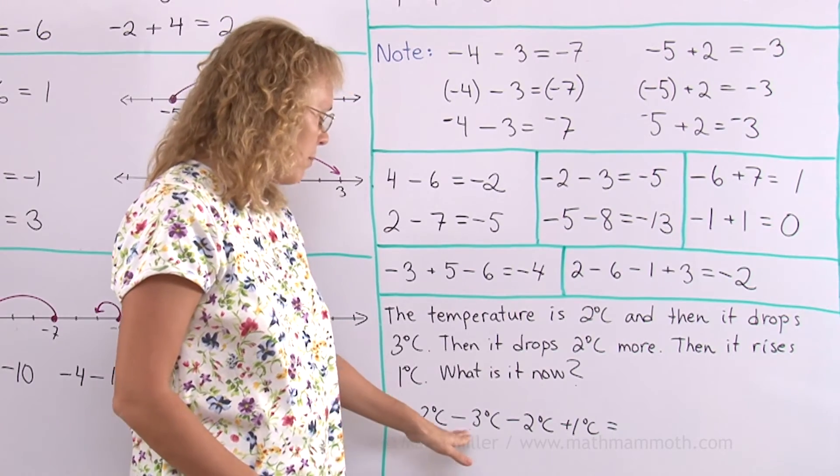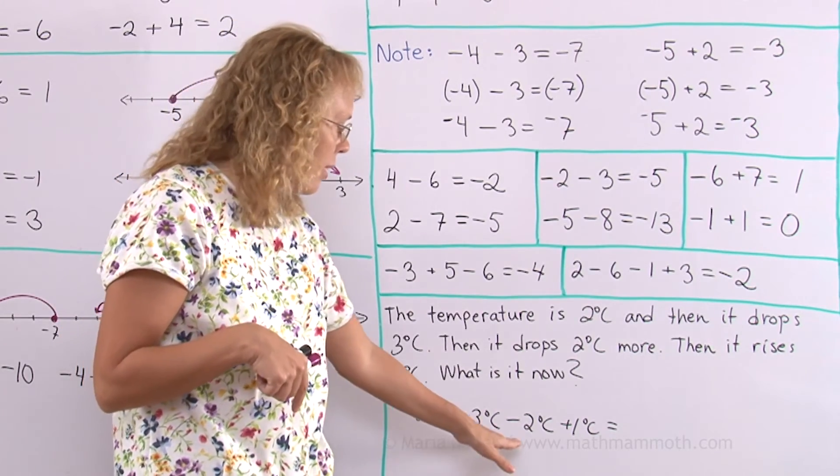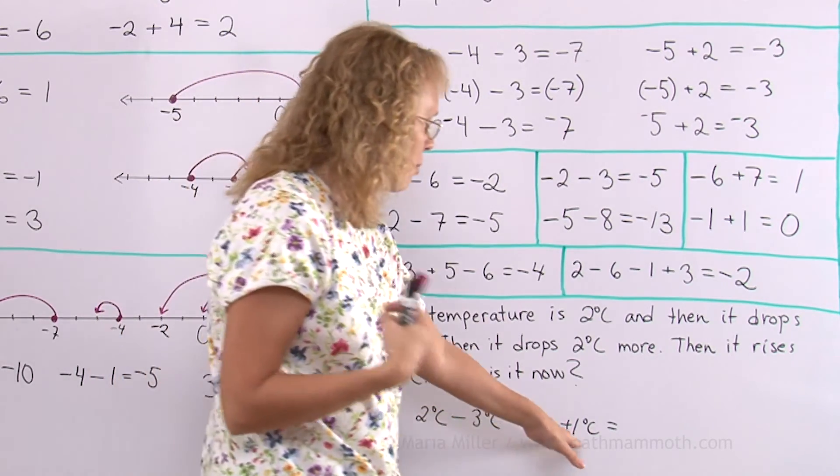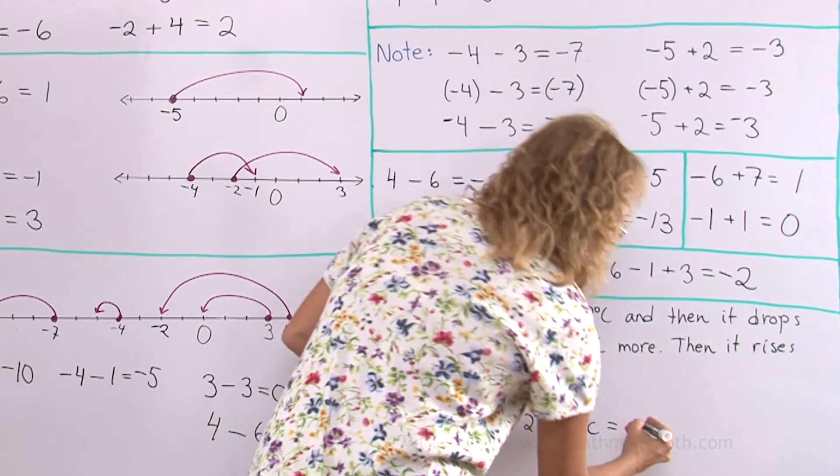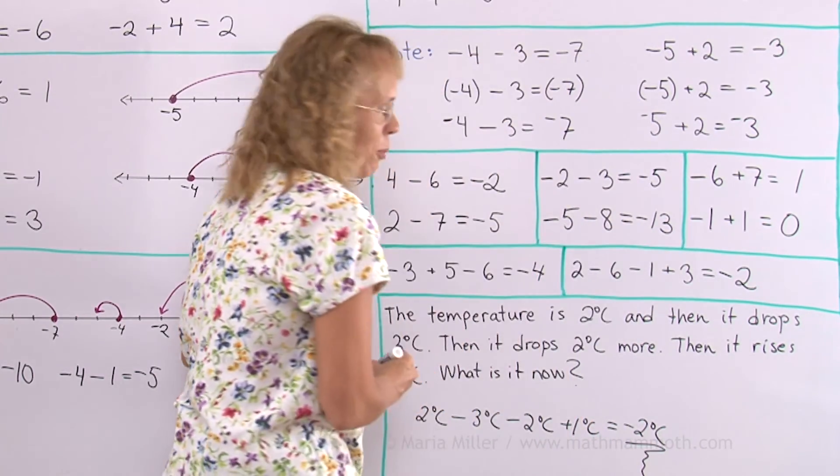2 minus 3. That would put you at negative 1. Minus 2 more would be then negative 3. And plus 1. So you end up at minus 2 degrees Celsius. Well done. I hope this was helpful.